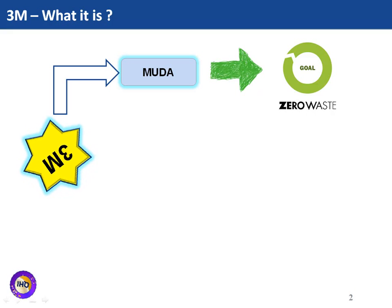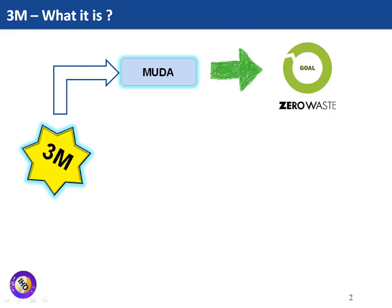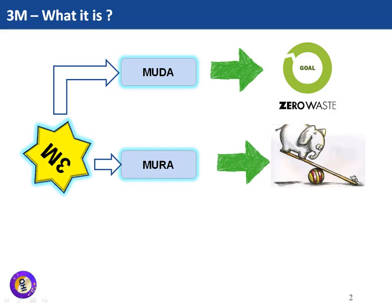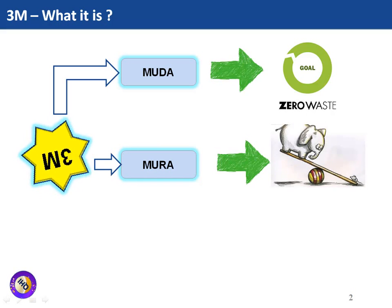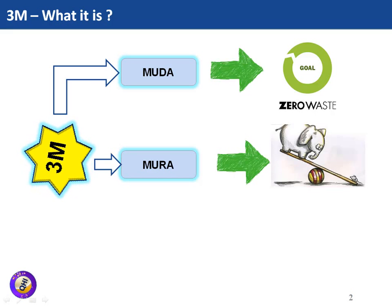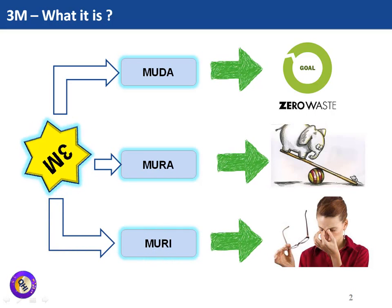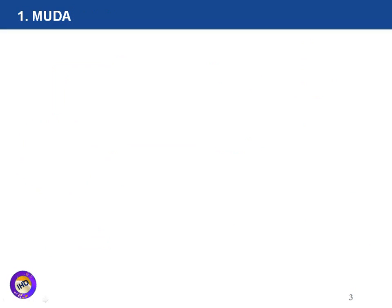The first M is Muda, which means waste. The goal of Muda in any process is to remove waste from the system. The second M is Mura, which means imbalance or inconsistencies in the processes — this leads to making processes imbalanced, resulting in inefficient processes. The third M is Muri, which means stress or strain on all people working in the organization or on equipment and machinery.